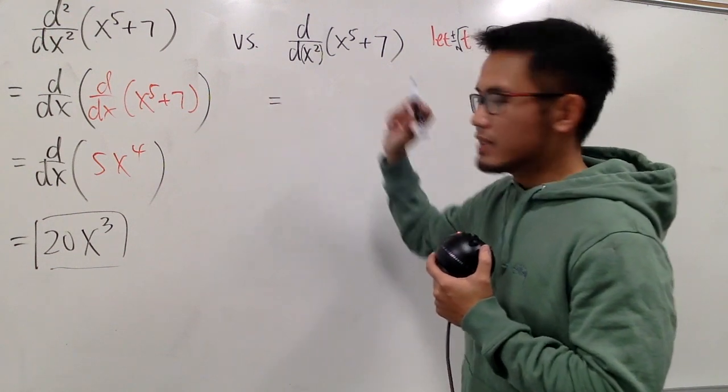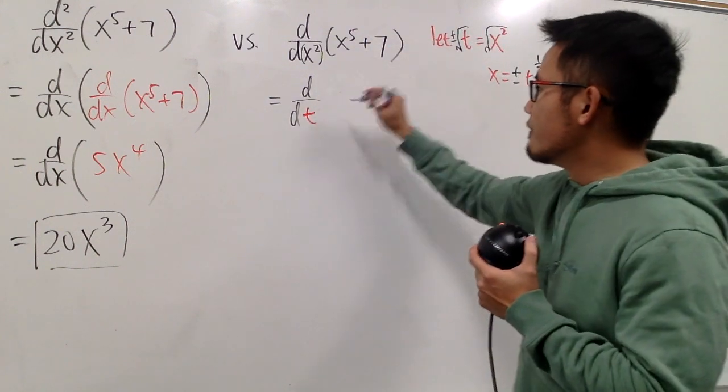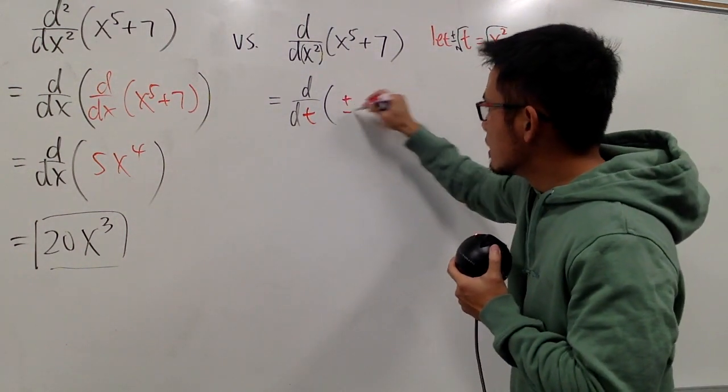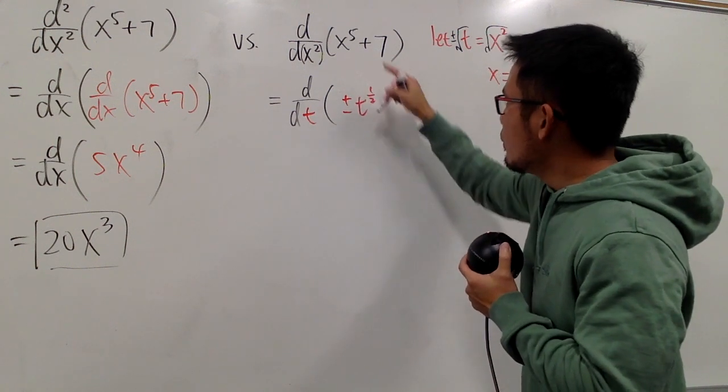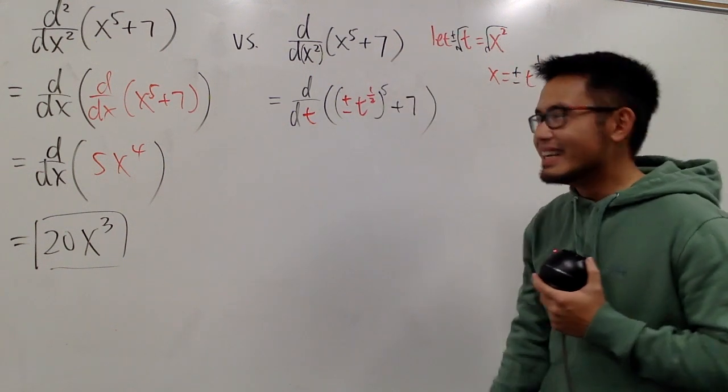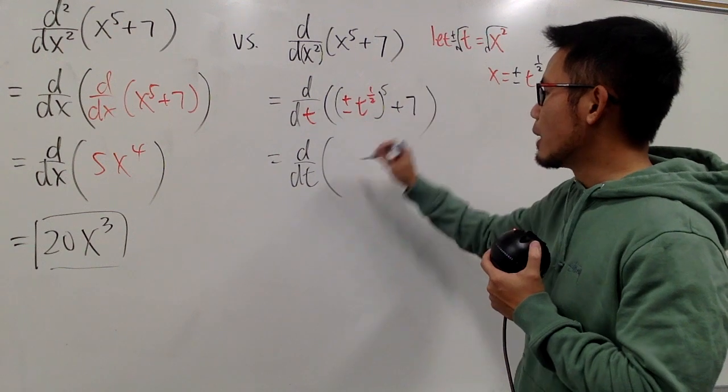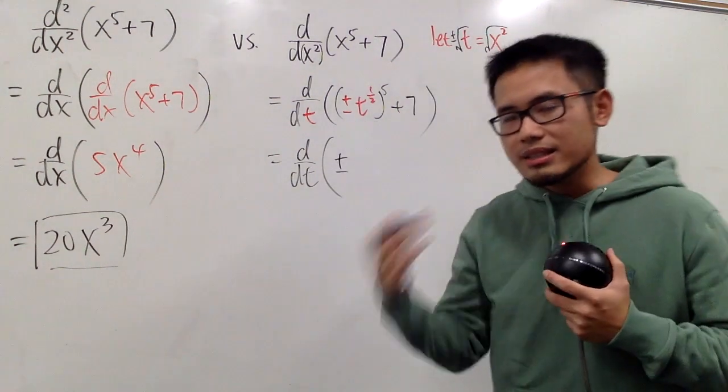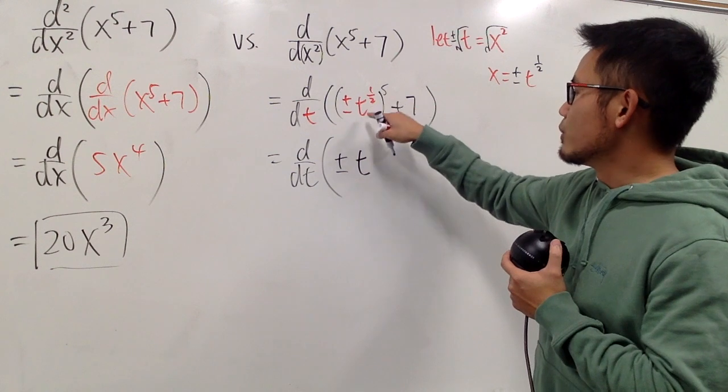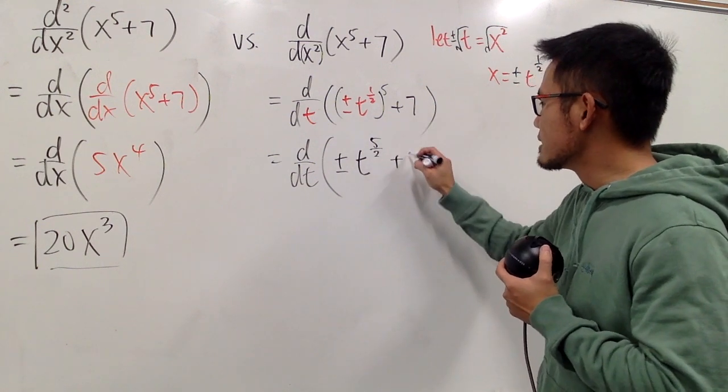So now, check this out. This is going to be d dt. We differentiate with respect to t. And then, the function is, instead of x to the fifth power, we already done as plus minus t to the 1 half power, and then raised to the fifth power, and then plus seven. Let's work out the powers. This is the same as saying d dt, and then we have the plus minus to the fifth power, is still plus minus, because negative to the fifth power can still be negative. This is going to be t to the one half power, and then to the fifth power, we just multiply the powers, so that's 5 over 2, and then plus seven.